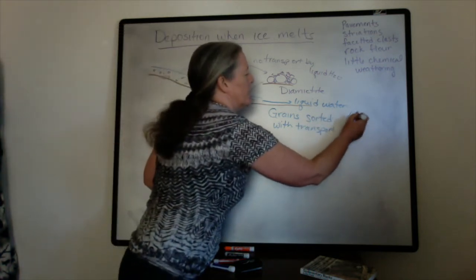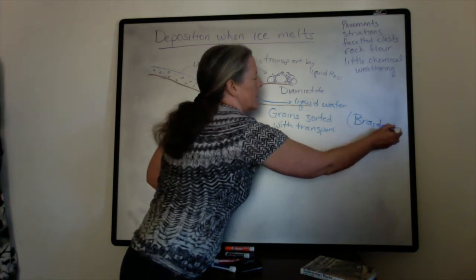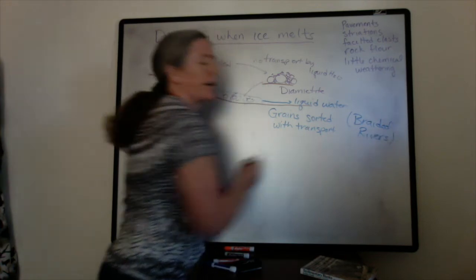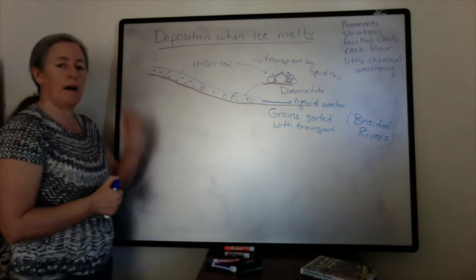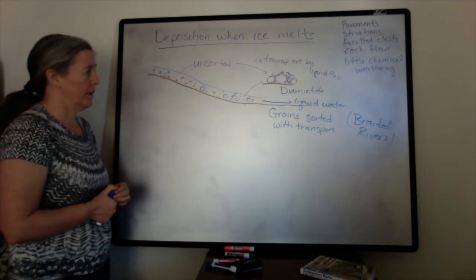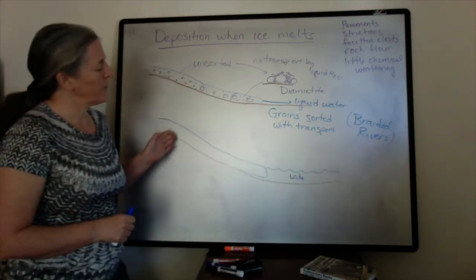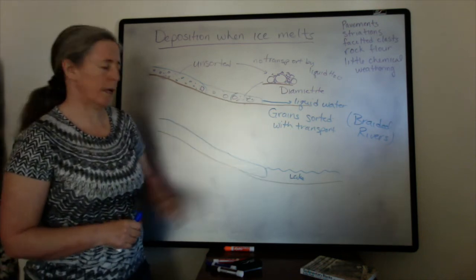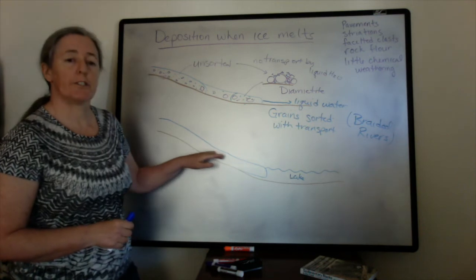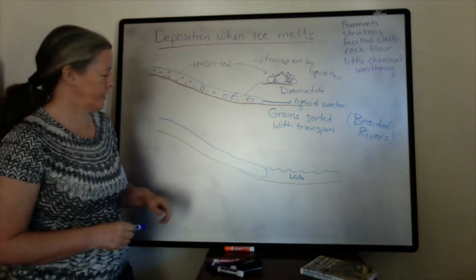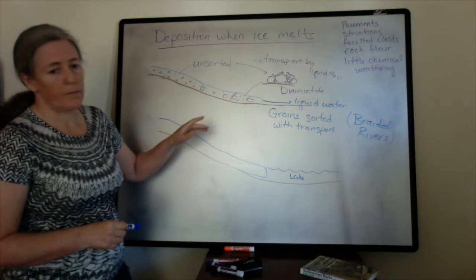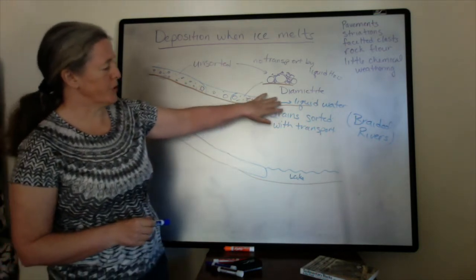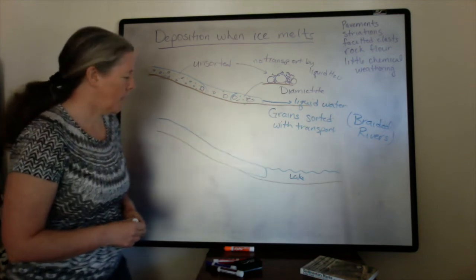So sometimes the topography is such that the melting water from the glacier ponds into a lake, and sometimes glaciers and ice sheets flow into the ocean. And so there's a significant difference in the depositional process between rivers and lakes and the ocean.